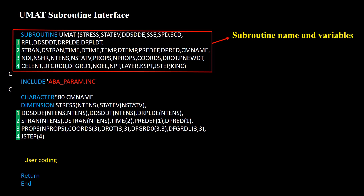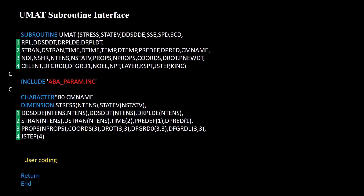Defining some of these variables is mandatory for all UMATs and some are optional. The most important variable that must be defined at the end of the increment is the Cauchy stress output. This variable brings the stress at the beginning of the increment as input, and we should update it with the stress at the end of the increment.